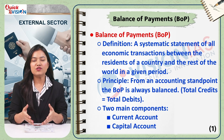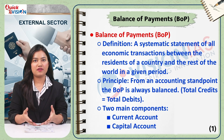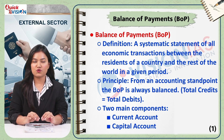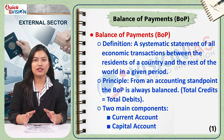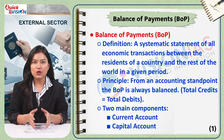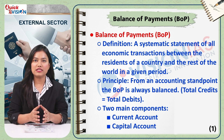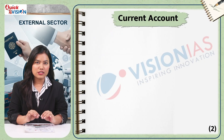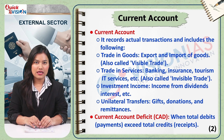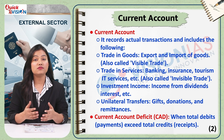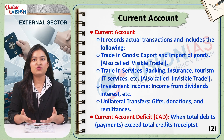From an accounting perspective, the BOP is always in balance, which means the total credits, that is the inflow of money, are always equal to the total debits, that is the outflow of money. The first part of the BOP is the current account, which records the flow of goods, services, and transfers.